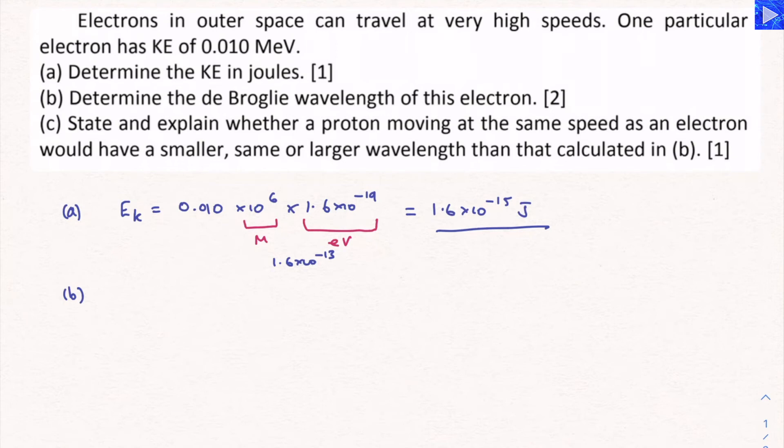Determine the de Broglie wavelength of this electron. So the obvious way to do this is work out the speed that corresponds with the kinetic energy we've worked out and then put that into the de Broglie wavelength equation. I'm going to do it a different way just to be different and it might be useful to do this in situations involving de Broglie wavelength and other questions as well.